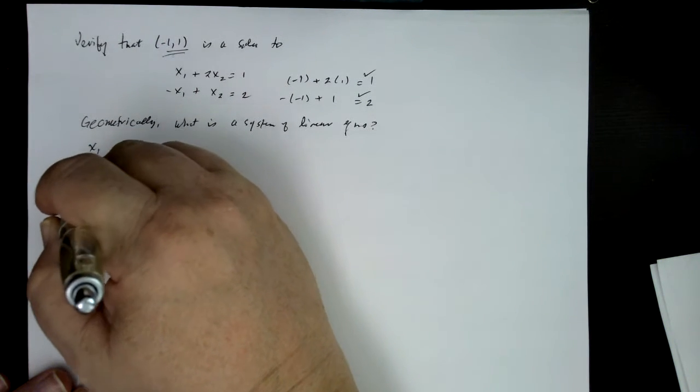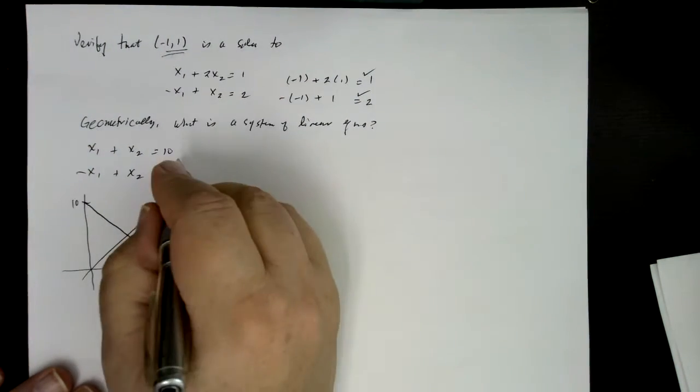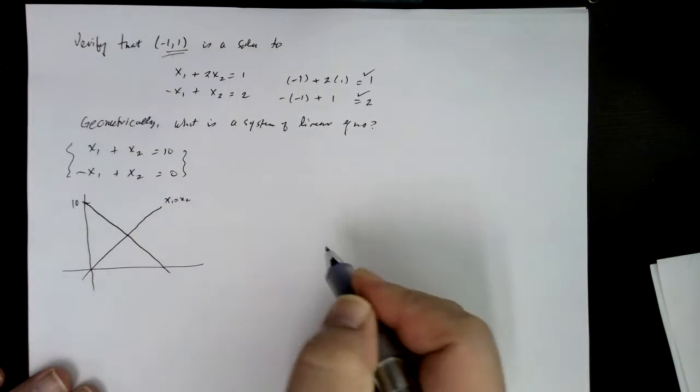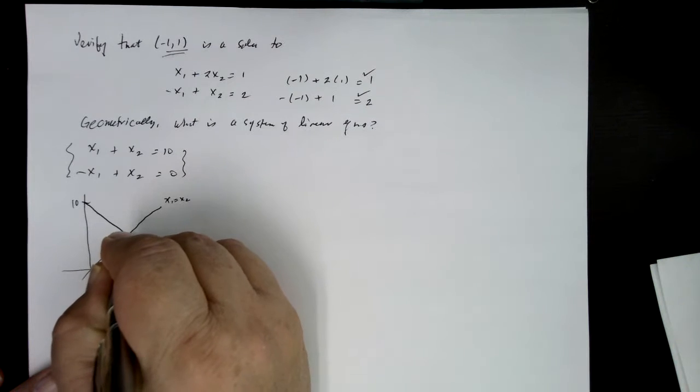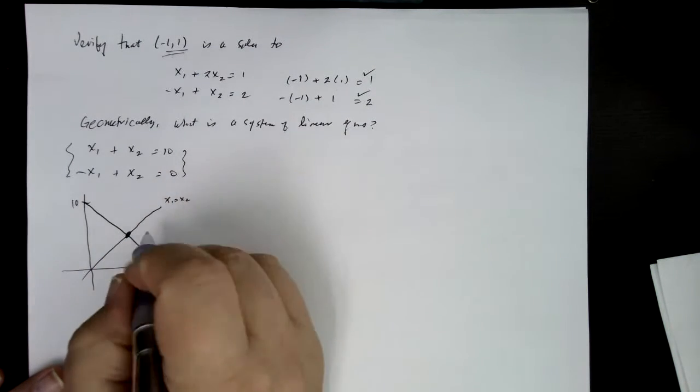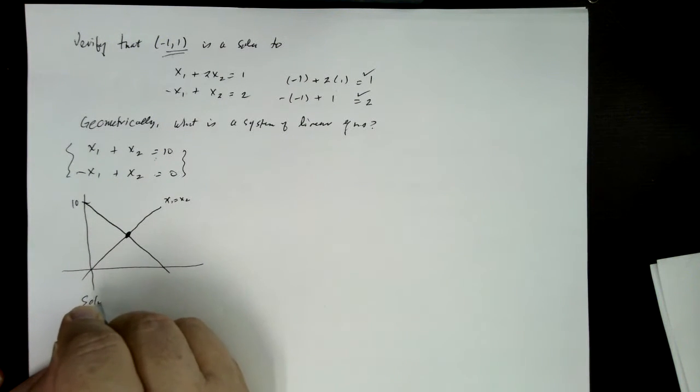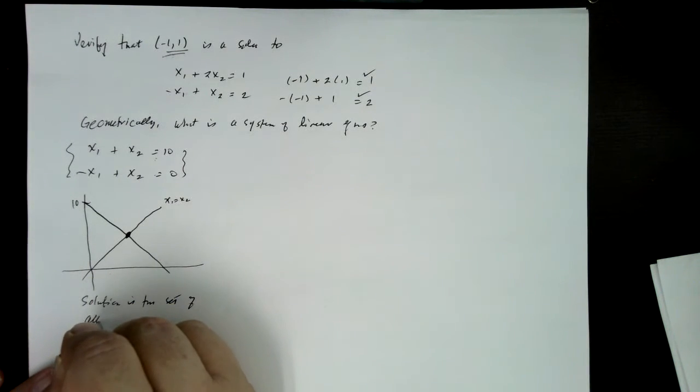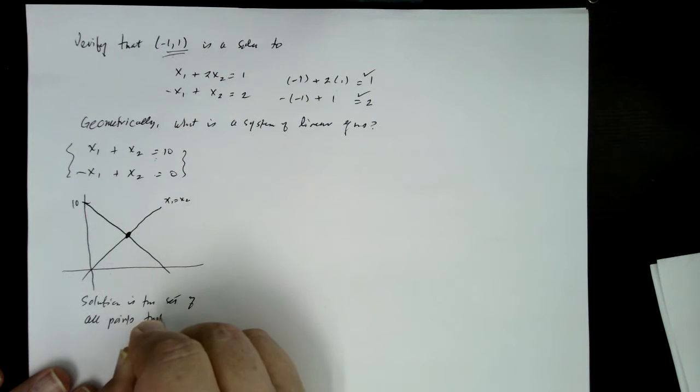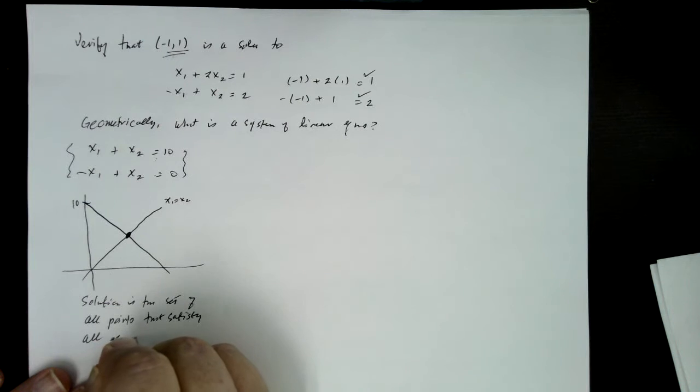And this one's going to be a line with the intercept of 10 and a slope of minus 1, so it's going to come down. It's going to start here at 10, come down. And so when you're looking at the system of equations, that means the point has to satisfy each of those equations, and so the solution to the system is a point of intersection between the two equations. So the solution is the set of all points that satisfy all equations, meaning they are the points of intersection.